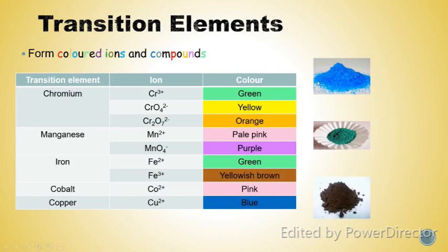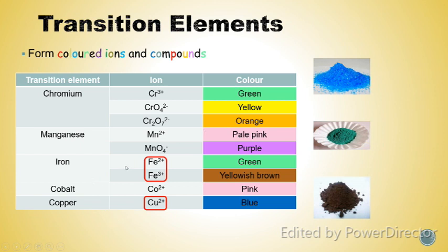Next, transition elements can form colored ions and compounds. In different compounds, the color of the transition elements will be different. For example, chromium(III) ion is green in color, chromate(VI) ion shows yellow color, and dichromate(VI) ion shows orange color. It is good if you can memorize all these colors for your SPM exam. These three ions are very popular in SPM exams.